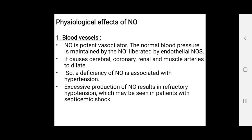Nitric oxide causes cerebral, coronary, renal, and muscle arteries to dilate. Deficiency of nitric oxide is associated with hypertension. Excessive production of nitric oxide results in refractory hypotension, which may be seen in patients with septicemic shock.